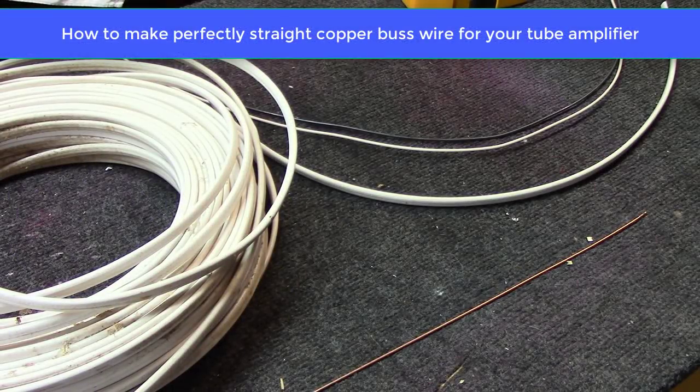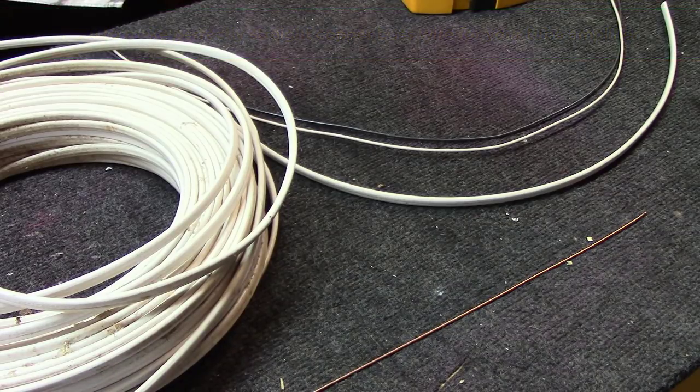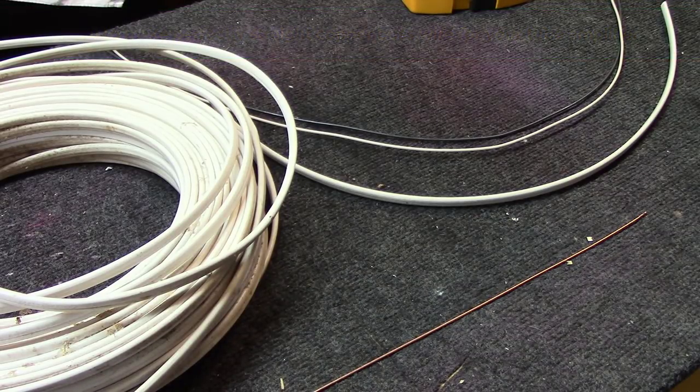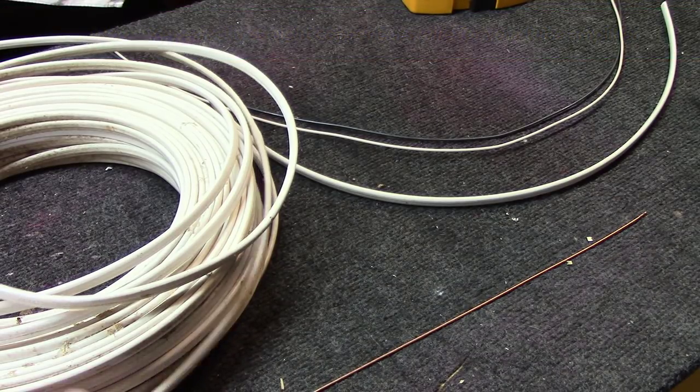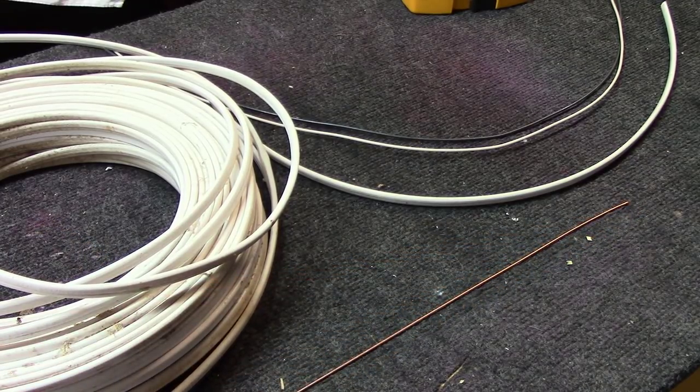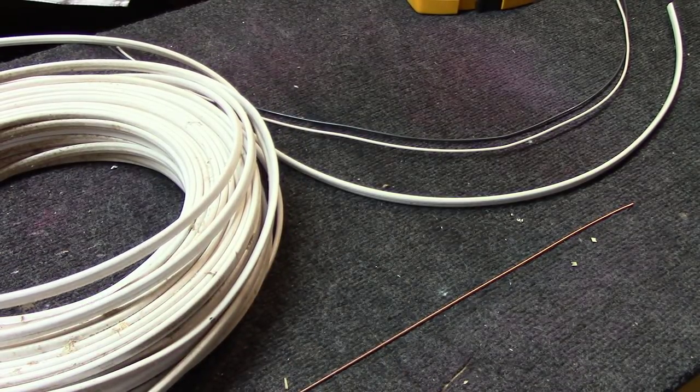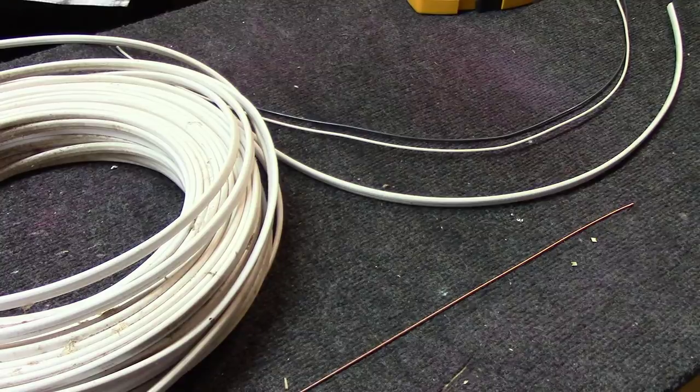Hey, welcome back everybody. A short little fun video here at Blueglo Electronics today. Working on this single-ended 807 amplifier and realized I need some bus wire. You're going to want straight, nice pieces like this. But most people use standard house wiring, the Romex type like this you get at Lowe's or whatnot.